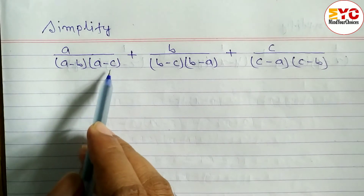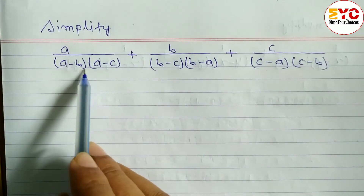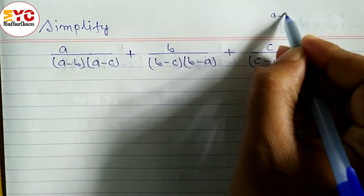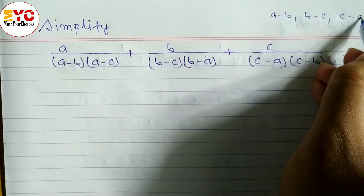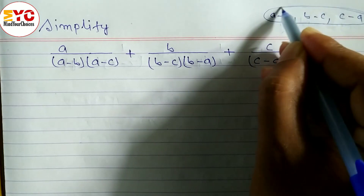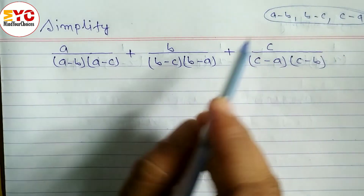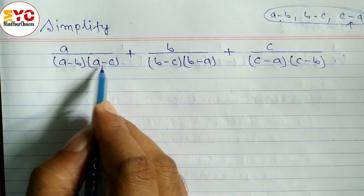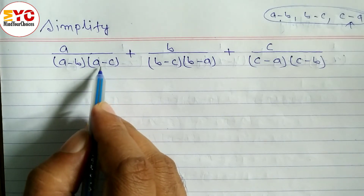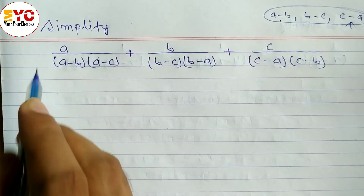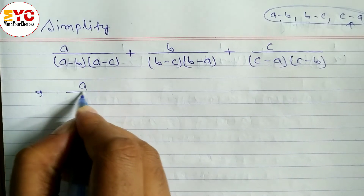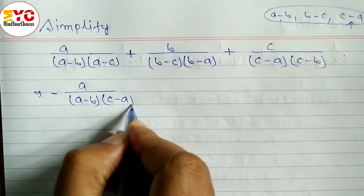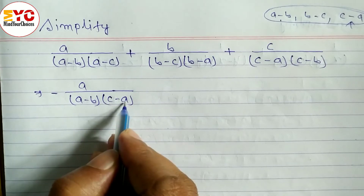Now a very interesting simplification: a over (a minus b)(a minus c) plus b over (b minus c)(b minus a) plus c over (c minus a)(c minus b). We always convert to the standard form (a minus b), (b minus c), (c minus a). Here a minus b is present. We need c minus a but have a minus c, so we take minus common and interchange to get c minus a, writing a minus sign in front.